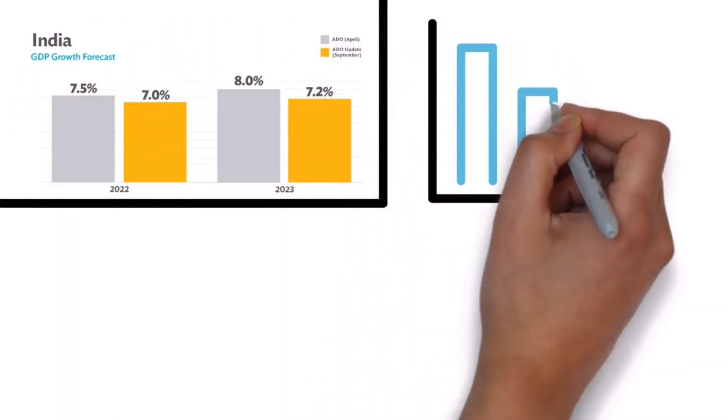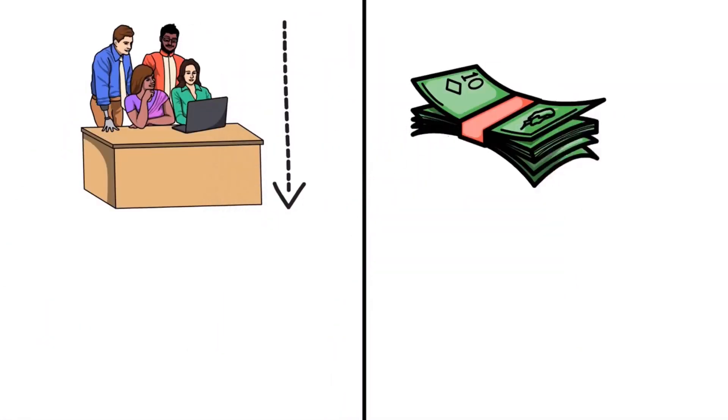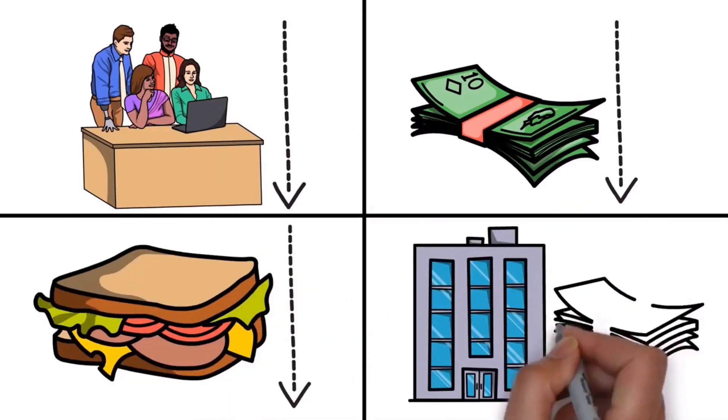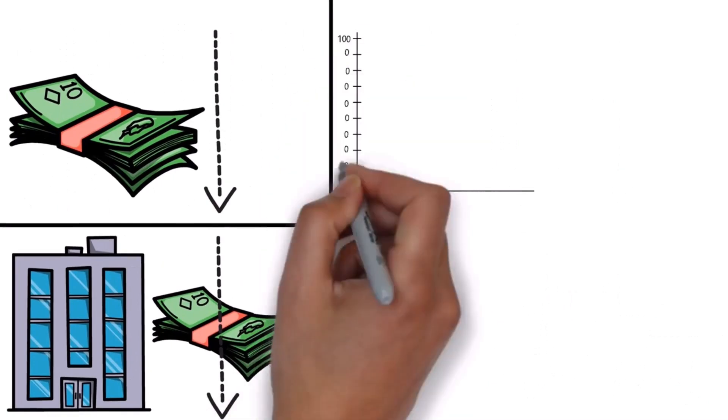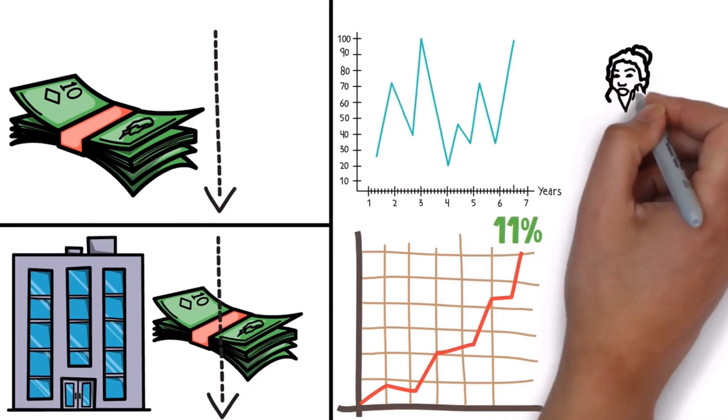And remember, anytime there's an economic slowdown, it usually means people are going to work less, we're going to make less, we're going to consume less. Therefore, companies are going to make less, which is usually a bad thing for the stock market. So, for India to grow at 11% over this next decade is pretty insane.